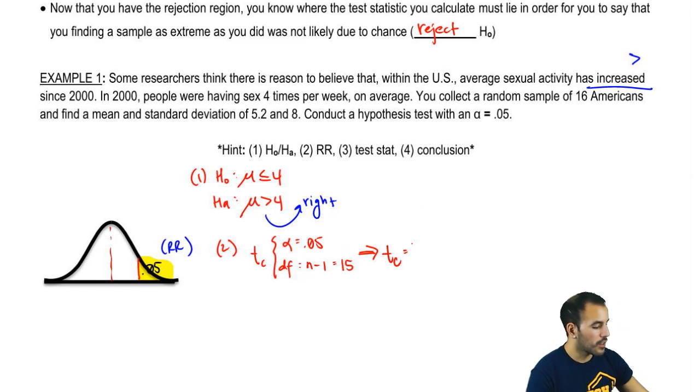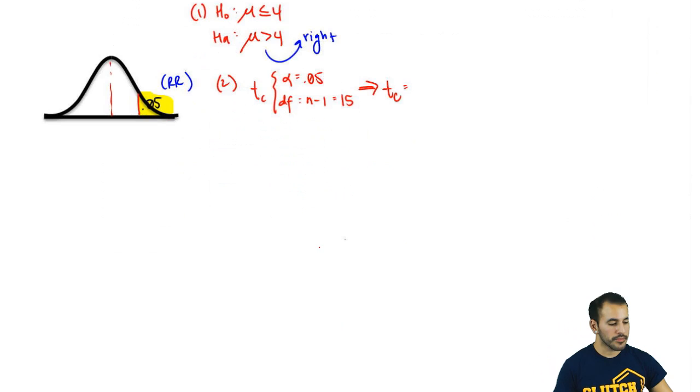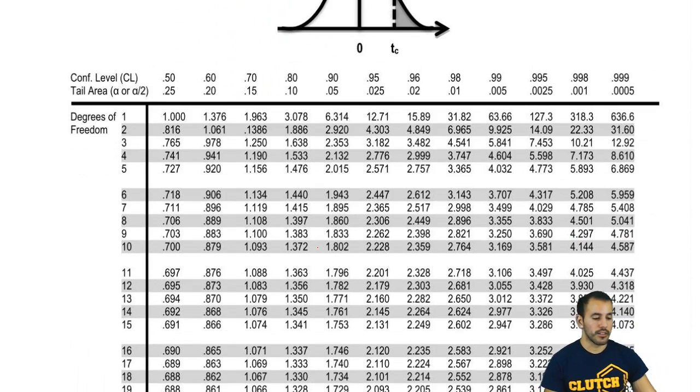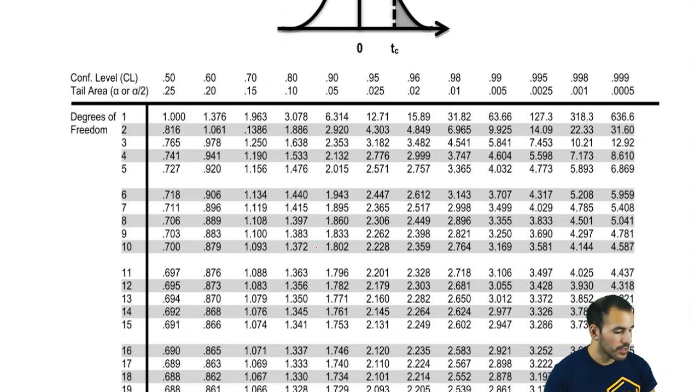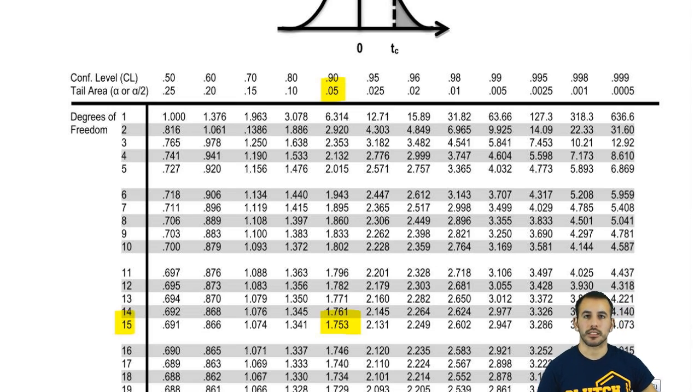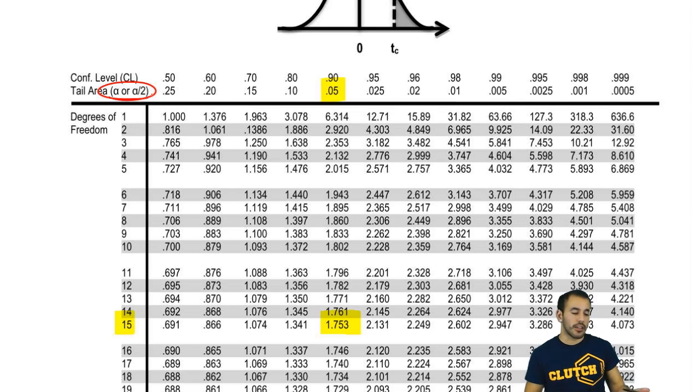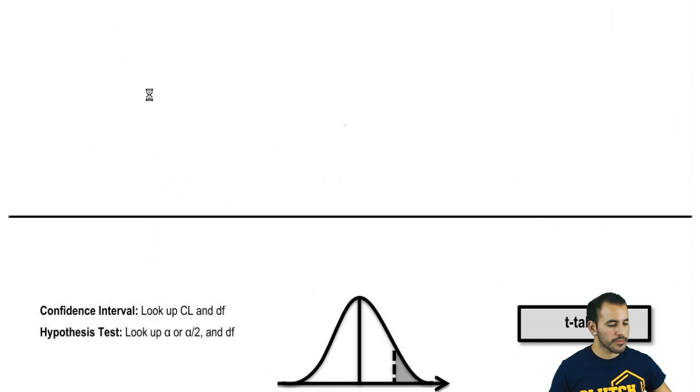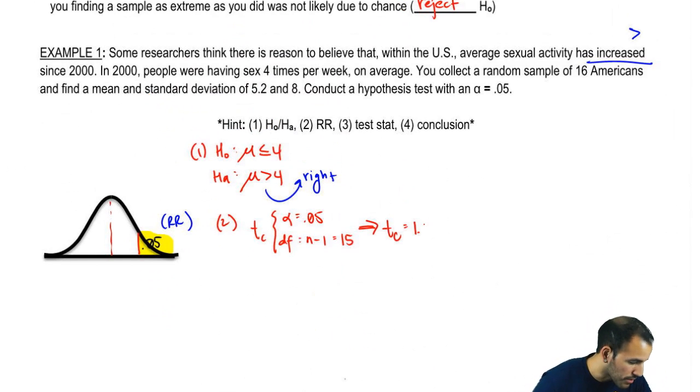We get a t-critical of, let's go ahead and scroll down to our table. So we have .05 degrees of freedom of 15, boom, boom, 1.753. Does that make sense? So you just literally go to the degrees of freedom, which is n minus 1, and the alpha, if it's a one-tail. If it's two-tail, you go to alpha over 2, and that's what I specify here. Alpha or alpha over 2, and that's a choice that you make, that you need to understand based off of what your alternate says. If it was pointing to the left, pointing to the right, not equal to, and then you make your decision from there.